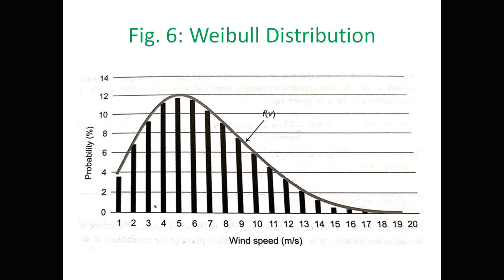The Weibull distribution curve is drawn by connecting the tips of each bar in the histogram, forming the function f(v). In this way, we can estimate wind energy: first by calculating power in wind, then presenting wind data in histogram form consolidated over a year, and finally expressing the data in functional form using statistics.